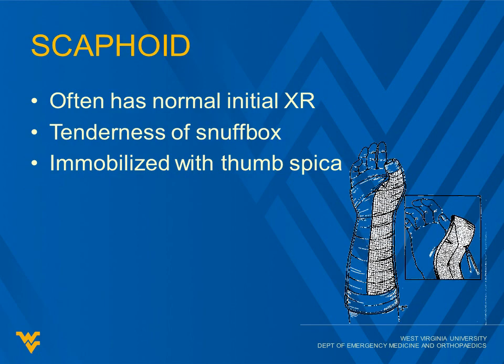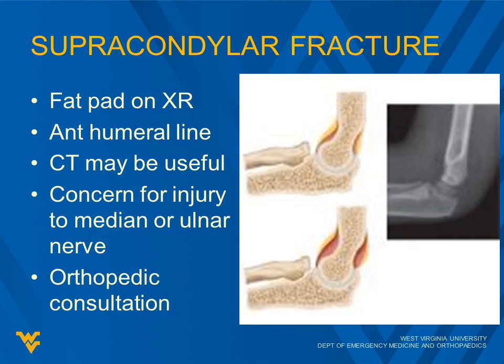The scaphoid often has a normal initial x-ray as well, but any tenderness of the anatomic snuffbox should be treated as a fracture and immobilized with a thumb spica splint. A supracondylar fracture has a fat pad sign on the x-ray — there's a nice example there to the right of how those fat pads develop. You can follow the anterior humeral line; that's an important one.